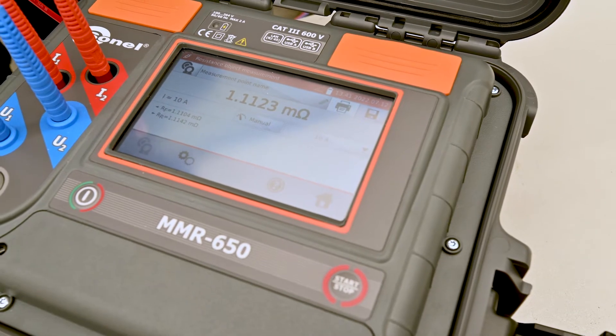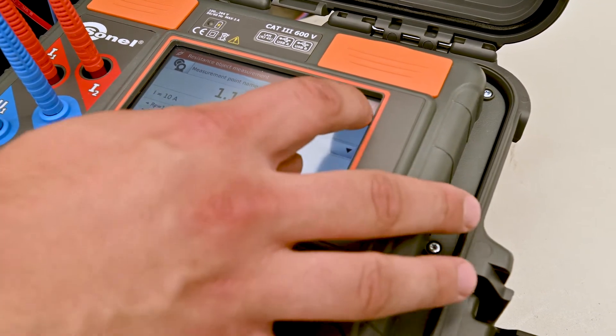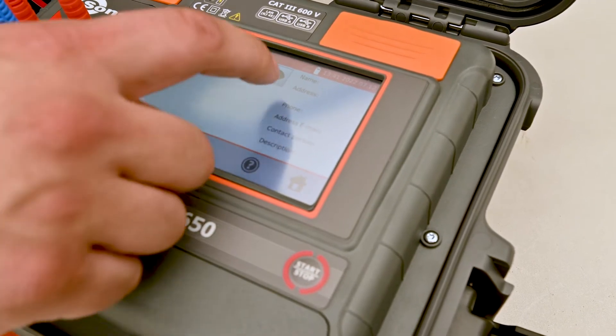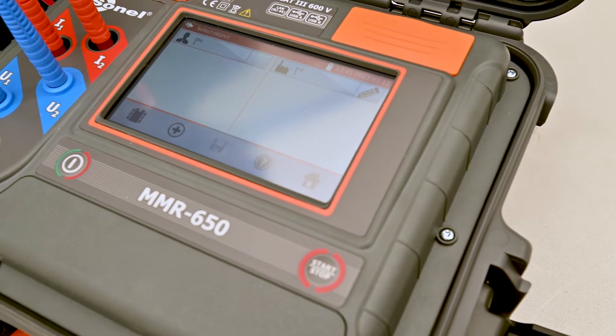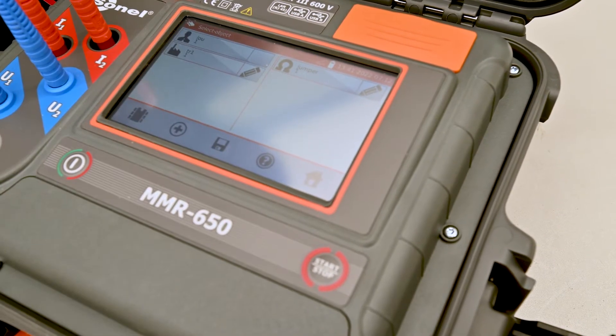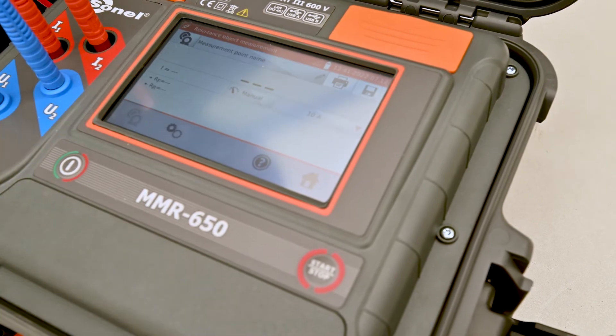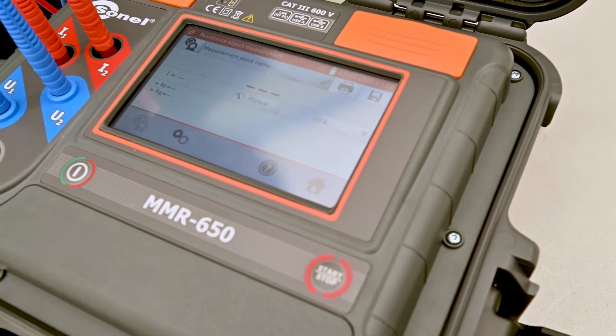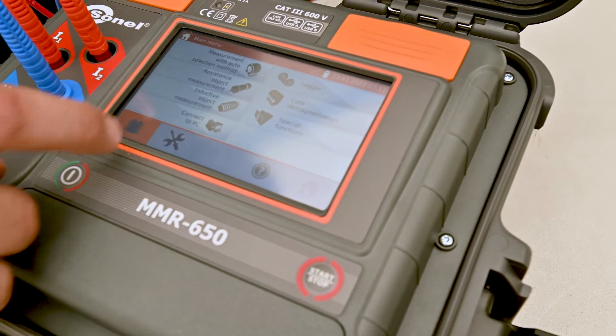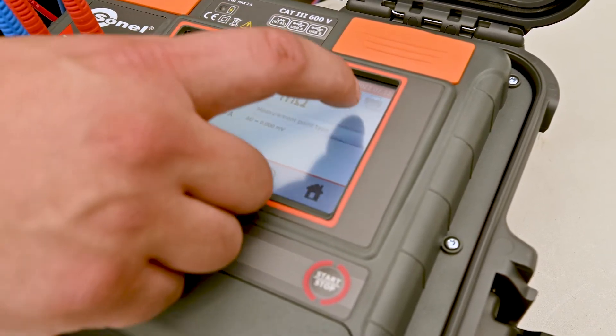Okay, so to save a measurement after it's complete, we press the save button. Then we need to select a client or create a new client. We'll select the client—it's me. Transformer one is our test object, and this measurement point is the jumper. You hear that it's been saved and we can go back home and make another measurement.